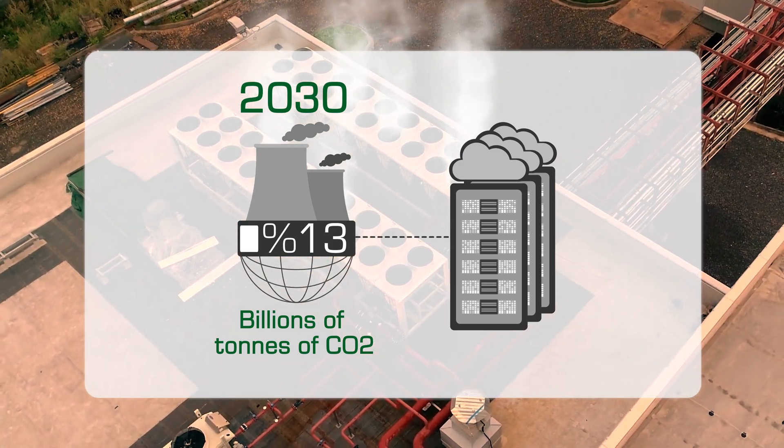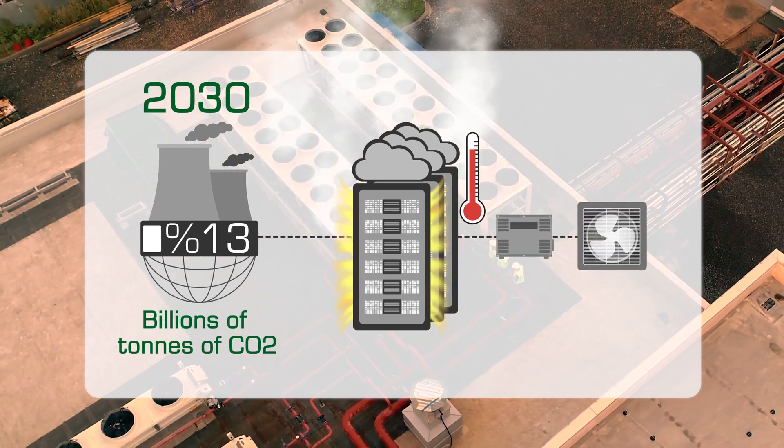To control this, chillers are used to keep them running properly. They alone account for up to 40% of their total energy used.